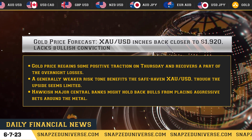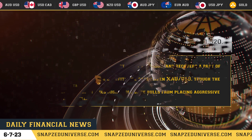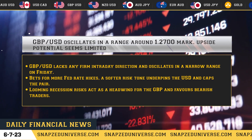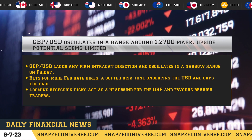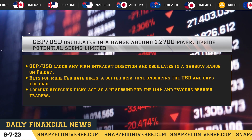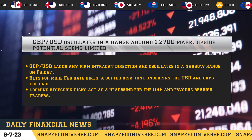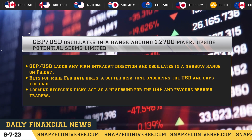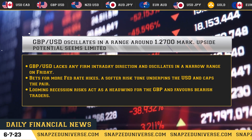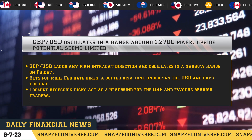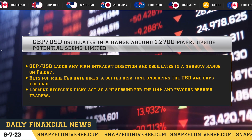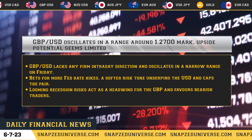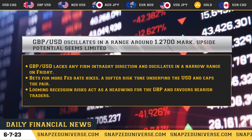GBP/USD oscillates in a range around the 1.7000 mark — upside potential seems limited. The pair lacks any firm intraday direction on Friday. Bets for more Fed rate hikes and a softer risk tone underpin the USD and cap the pair. Looming recession risks act as a headwind for the GBP and favor bearish traders.